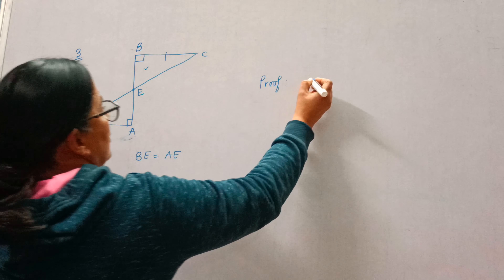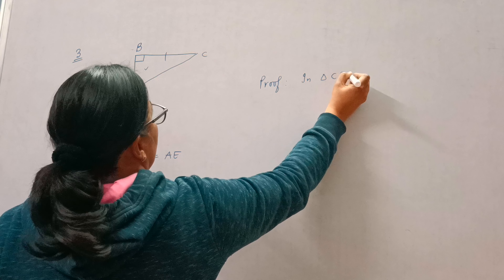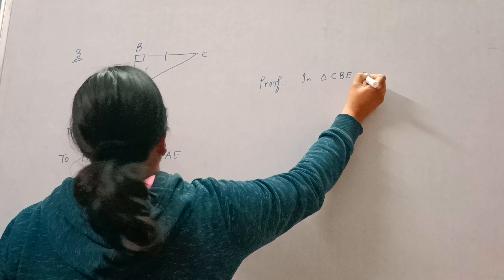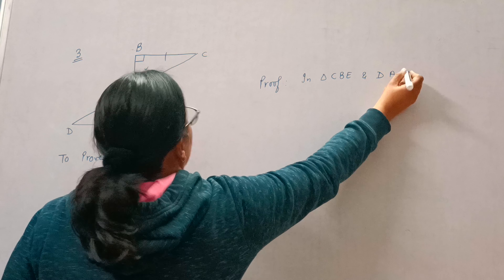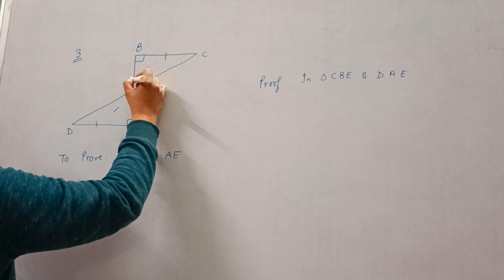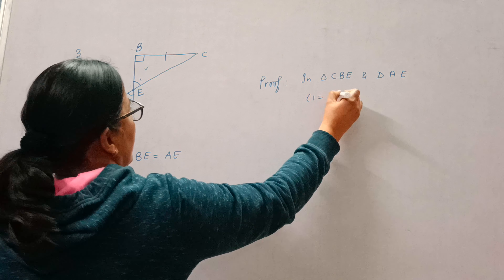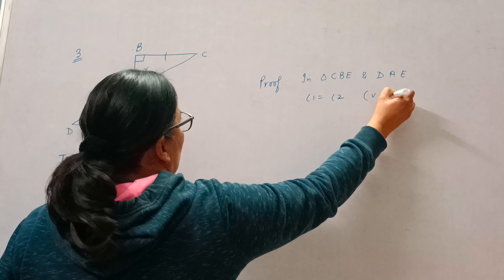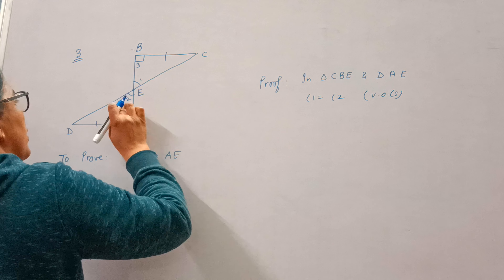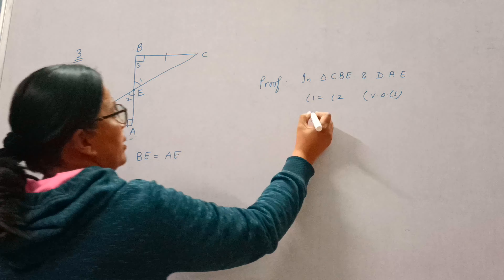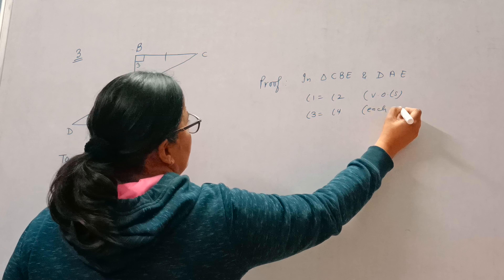This is question number 3 of exercise 7.1. We will take two triangles and make them congruent. In triangle CBE and triangle DAE: angle 1 is equal to angle 2, as they are vertically opposite angles.